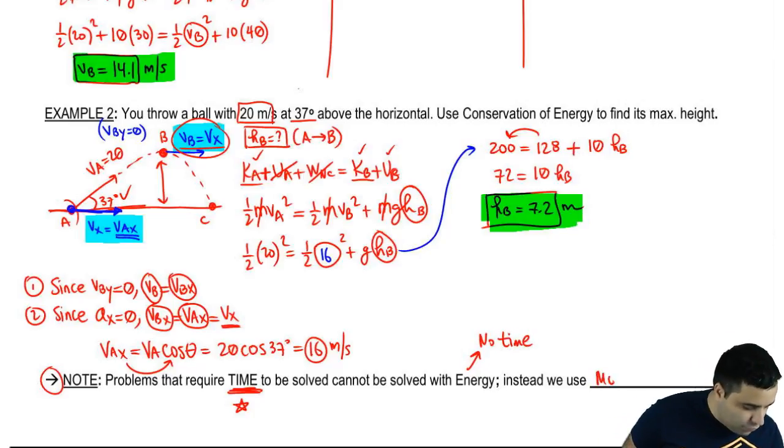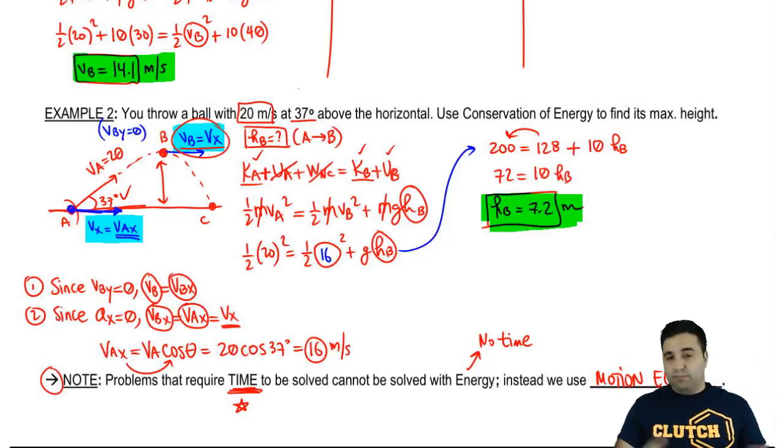And instead, we're going to have to use motion equations. We're not really going to run into these here because this is from a previous chapter, right? And the whole idea of this portion is that you can do some of these questions using energy, but not all of them. Some of the other questions that you won't be able to do using energy will have time. And in that case, you have to use motion equations instead. Whenever you're being asked for time, use motion equations. Otherwise, you might be able to use the energy equation. That's it.